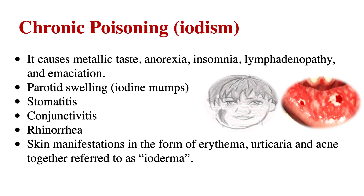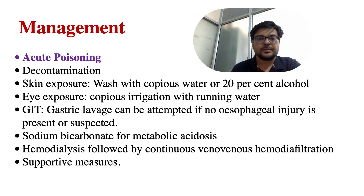Chronic poisoning, also called iodism, causes metallic taste, anorexia, insomnia, lymphadenopathy, and emaciation. It also causes parotid swelling, stomatitis, conjunctivitis, and rhinorrhea. Skin manifestations in the form of erythema, urticaria, and acne are together referred to as ioderma.